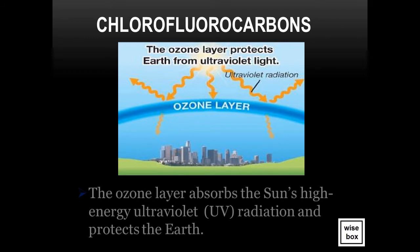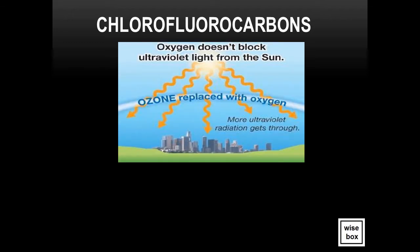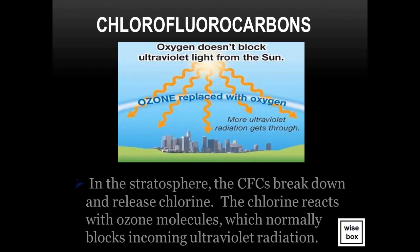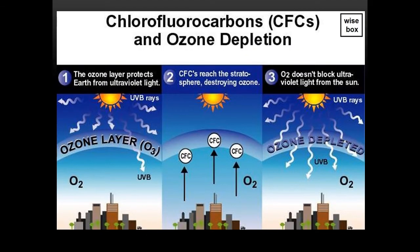The ozone layer absorbs the Sun's high-energy ultraviolet UV radiation and protects the Earth. In the stratosphere, CFCs break down and release chlorine. The chlorine reacts with ozone molecules, which normally block incoming ultraviolet radiation. Ozone is depleted and is replaced by oxygen; however, oxygen does not block ultraviolet light from the Sun.